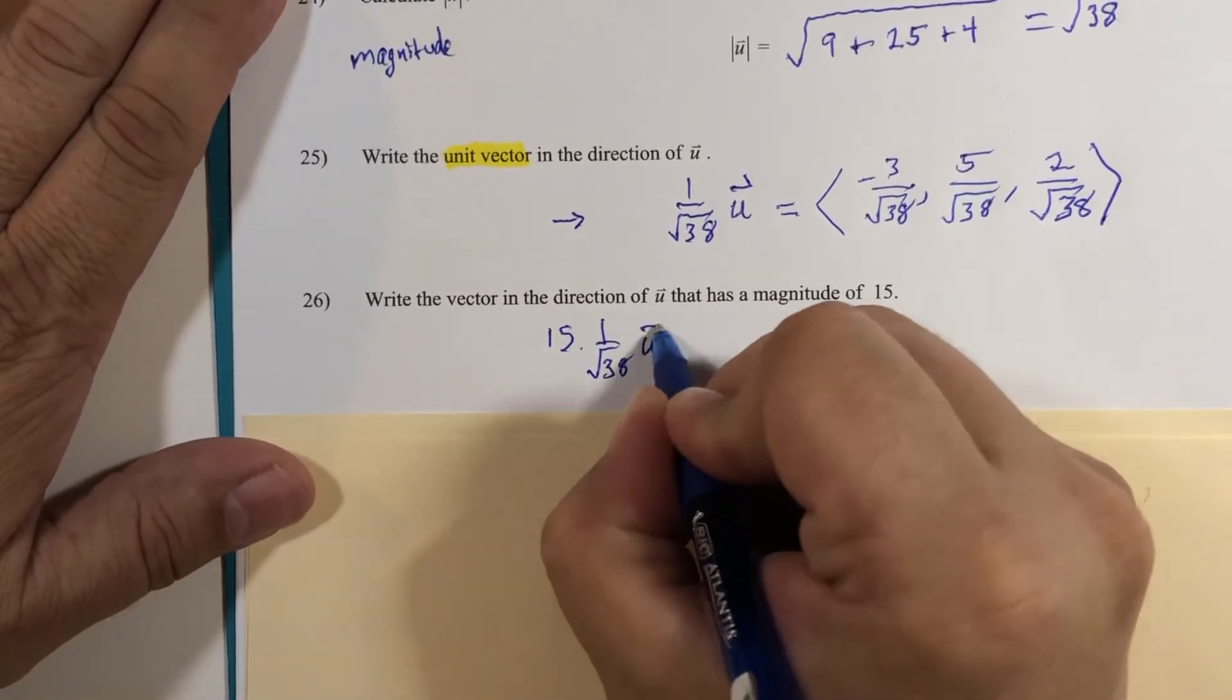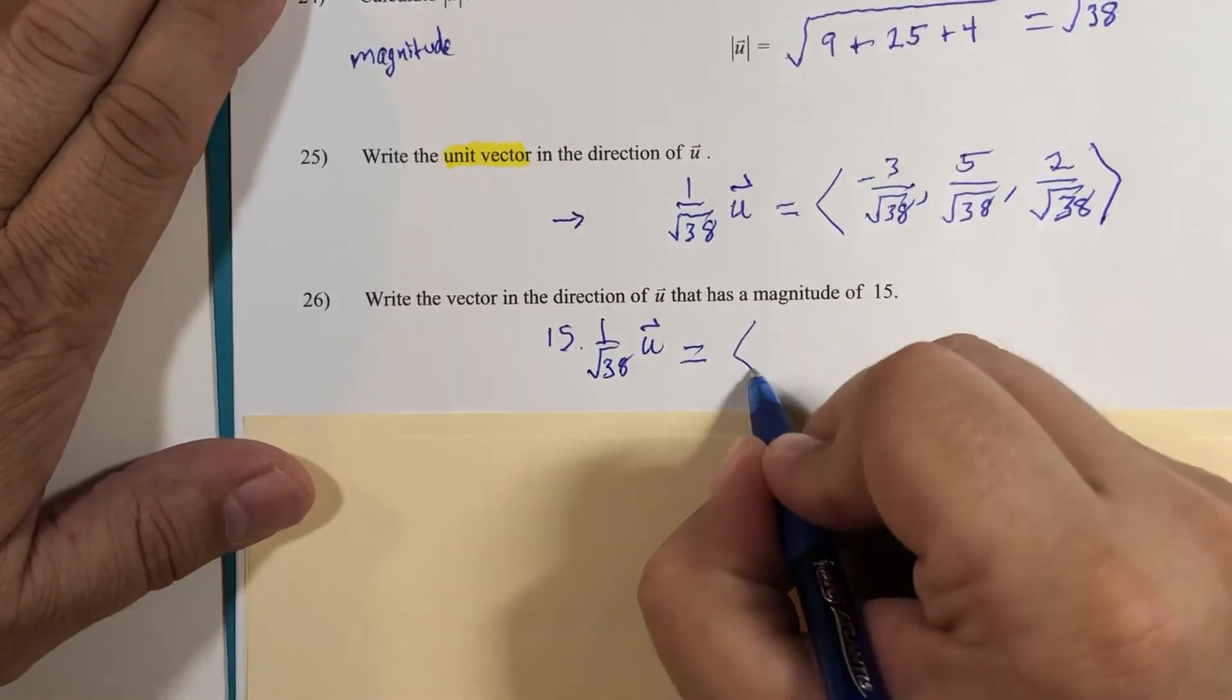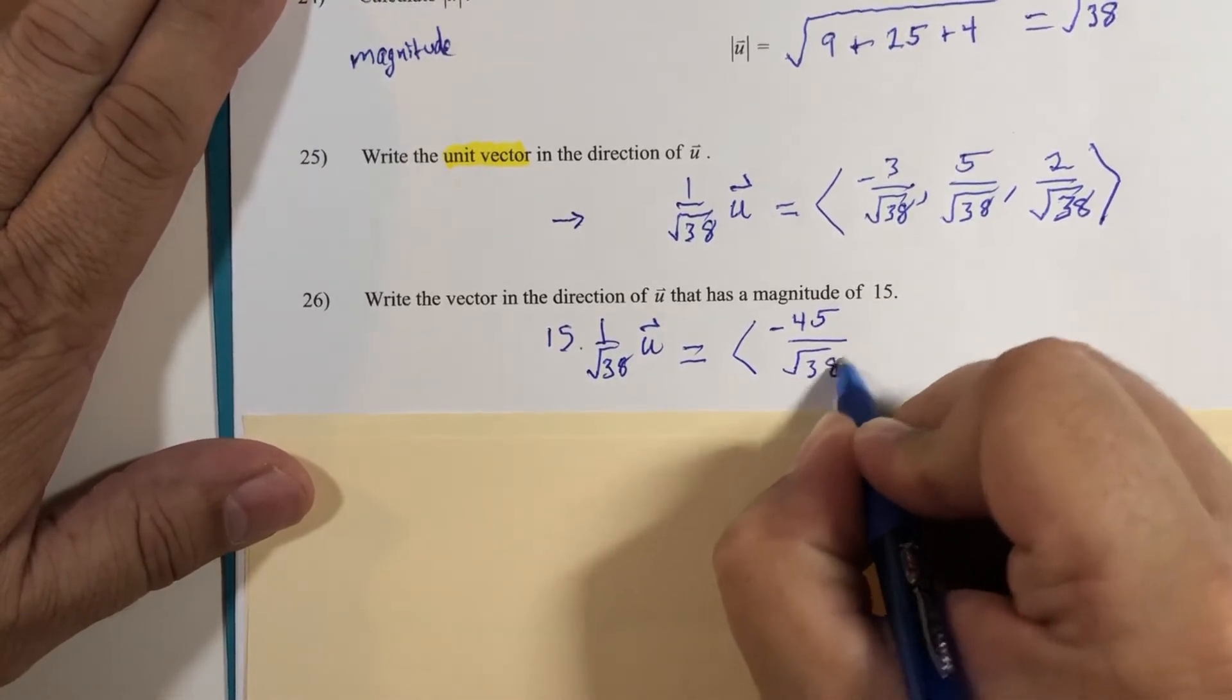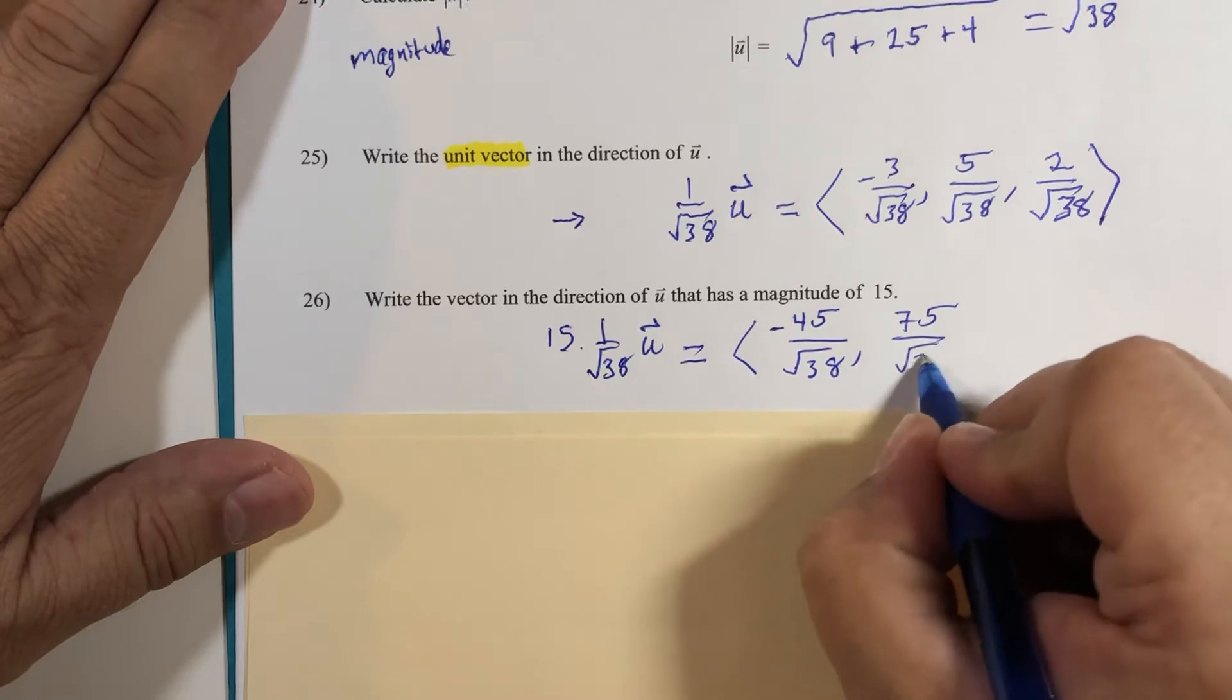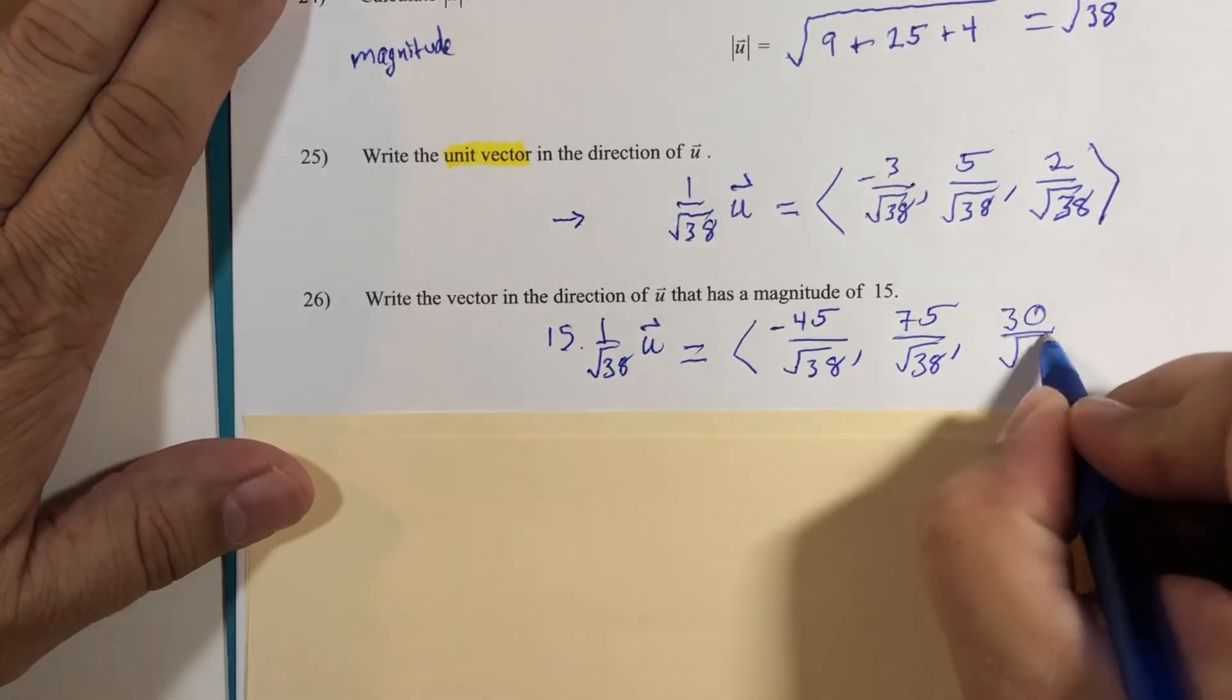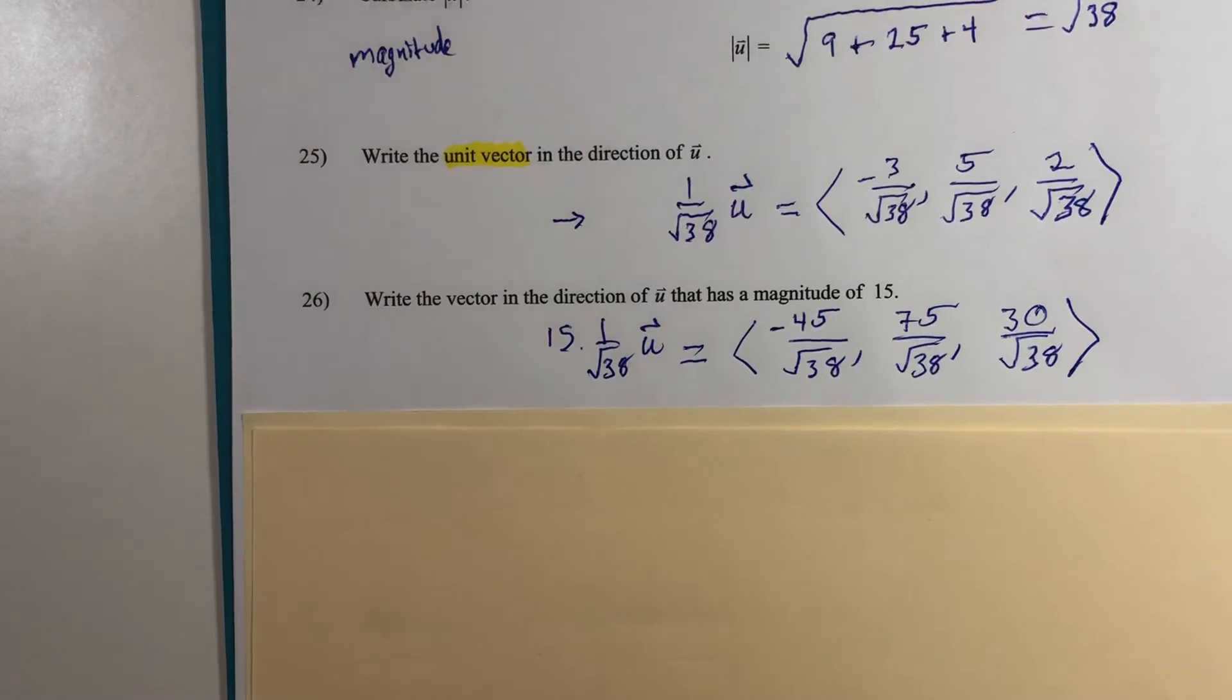So what's 15 times -3? That's -45, and 15 times 5 is 75 over root 38, and 2 times 15 is 30 over root 38. It's a little bit messy at first glance, but it's not too difficult to verify that its magnitude is 15 exactly.